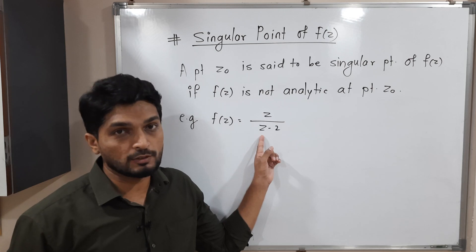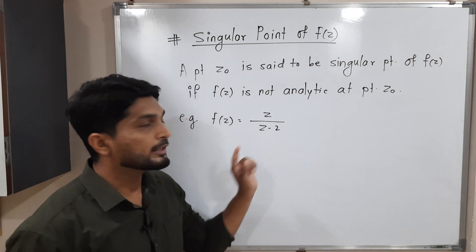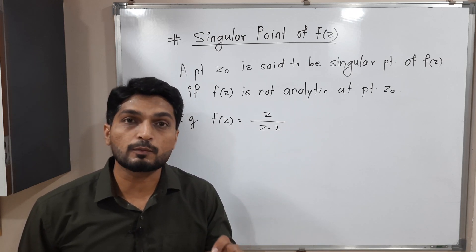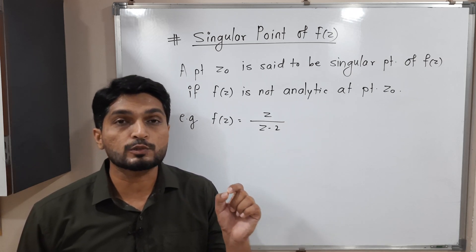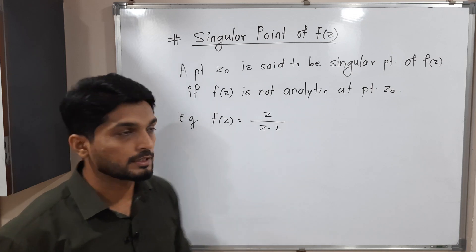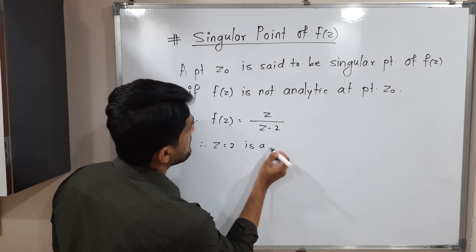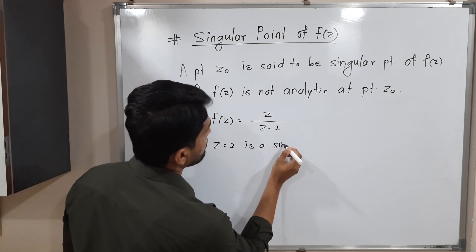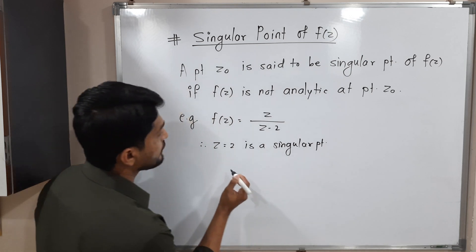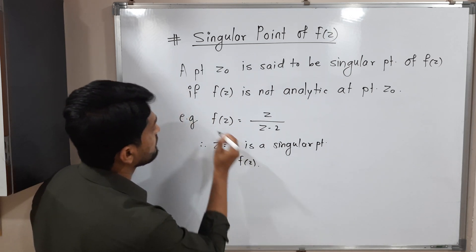If I put z is equal to 2, then 2 minus 2 will be 0. That means for z is equal to 2, the denominator is 0. That is why 2 is a singular point of f of z. Therefore, z is equal to 2 is a singular point, or you can say singularity, of f of z.